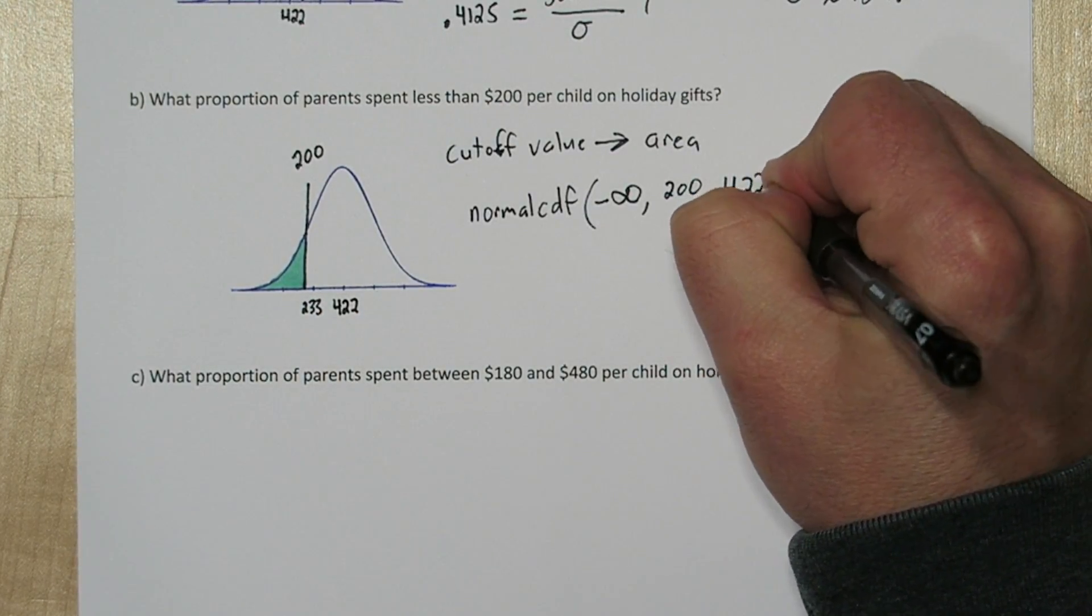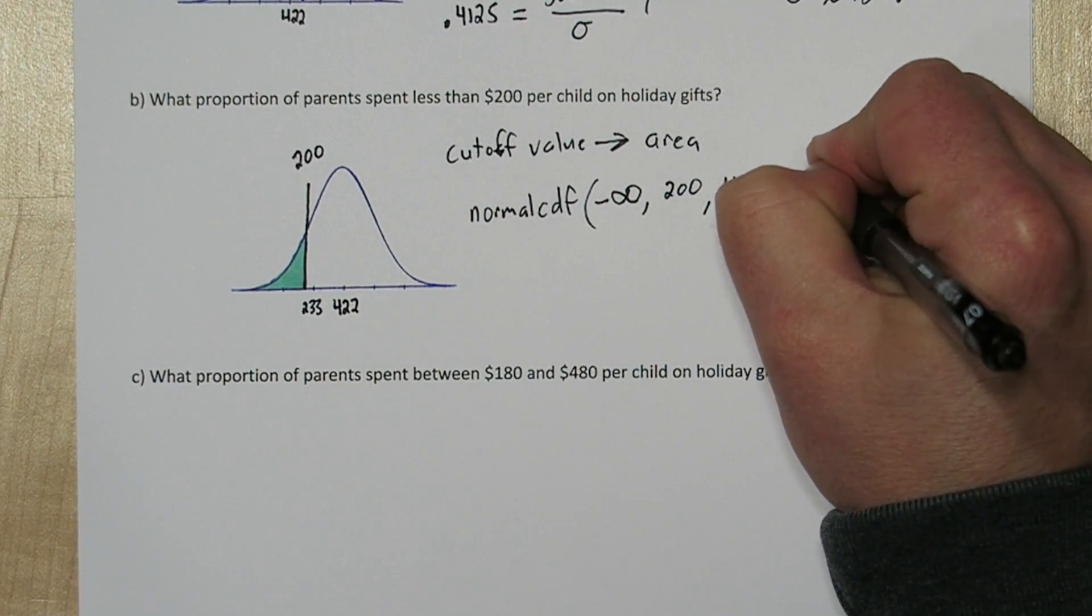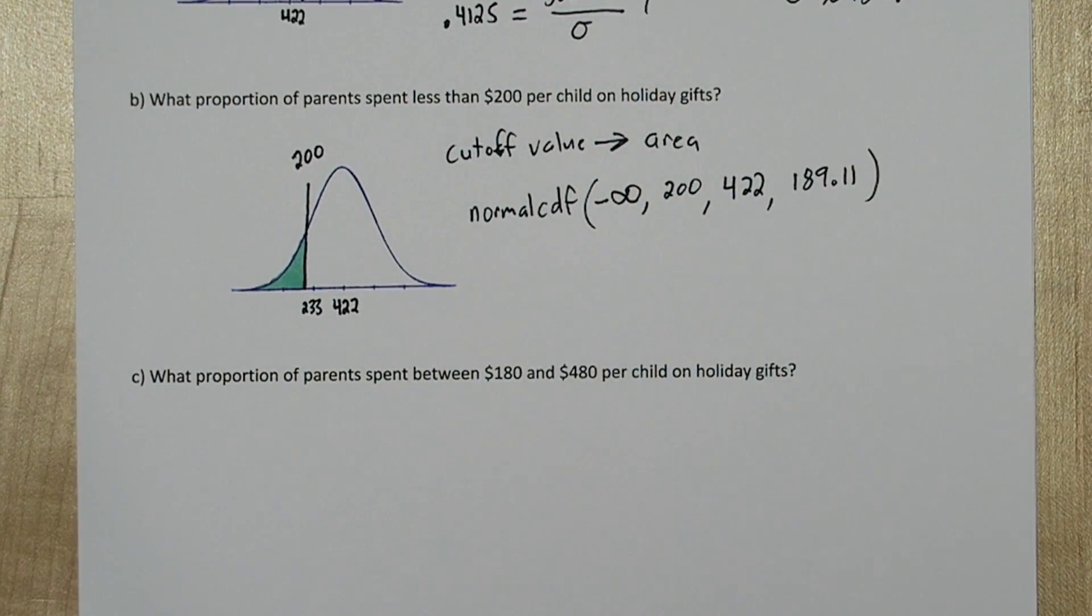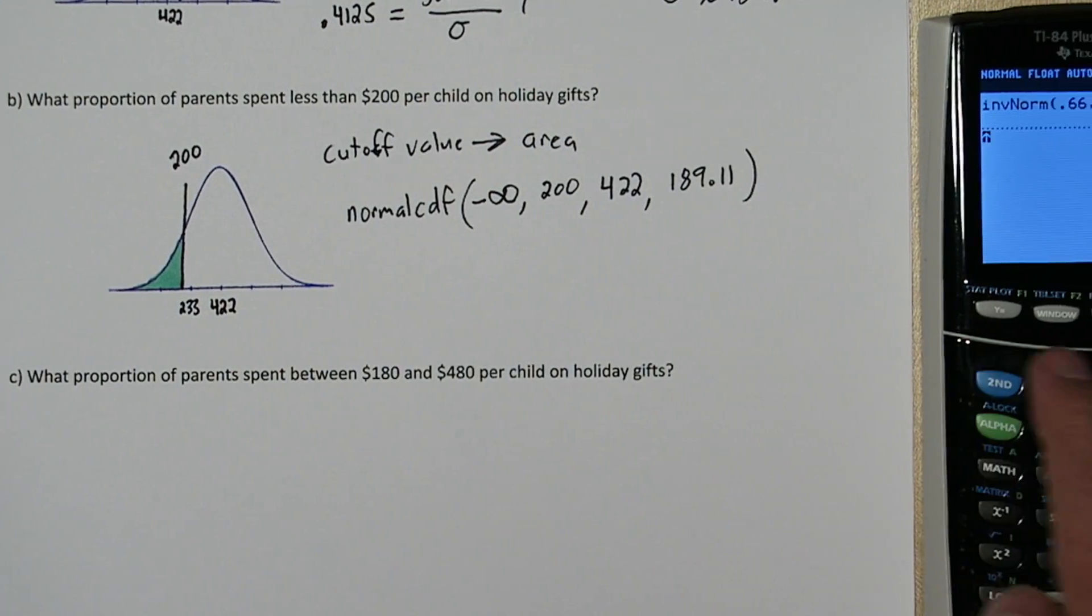And our mean is 422. And our standard deviation is the 189.11 that we just found. So to do this on the calculator, press 2nd VARS. This is your distribution menu. Go to norm CDF.